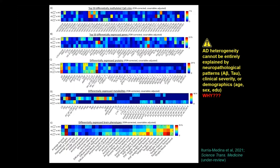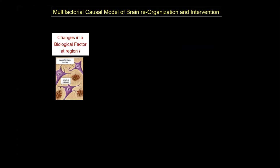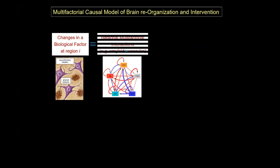The models I will present next will help explain why this happens. We propose a multifactorial causal model of disease propagation and therapeutic intervention. It assumes that changing a given biological factor at a given brain region — for example, increasing amyloid or tau deposition — will be a function of all the local causal interactions with other biological factors, like the influence of the vascular system on amyloid accumulation, the interaction between the metabolic and vascular systems, and the level of atrophy. This moves us from empirical models to a model that assumes specific modes of interaction between different biological factors.